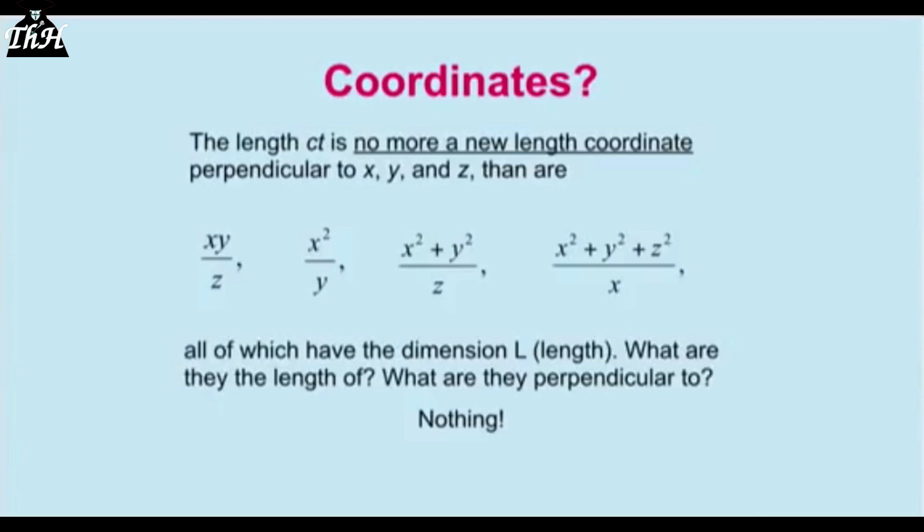If I take xy divided by z, it has the dimensions of length, but it's not the length of anything — not the hypotenuse of a right triangle, not x, y, or z. It's just a combination that produces length but is not a new dimension and is not orthogonal to x, y, or z. Similarly, x² + y² + z² divided by x, y, or z gives the dimensions of length but does not create a new dimension. Combinations of x, y, and z don't give us new dimensions.